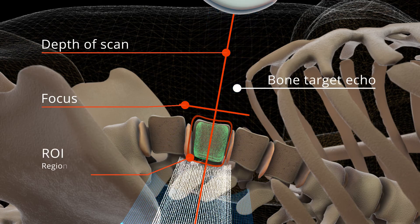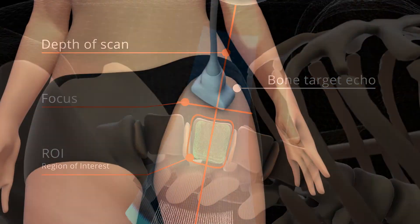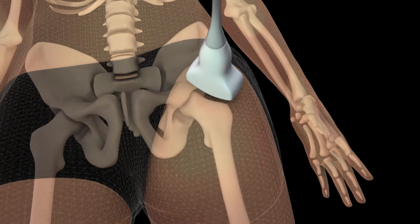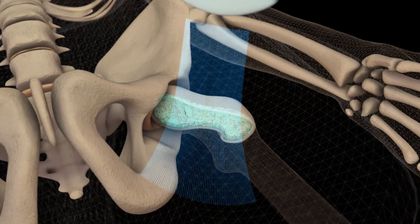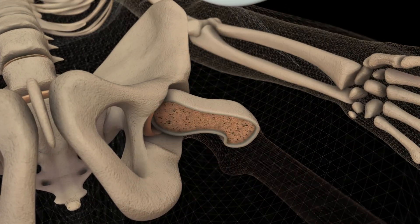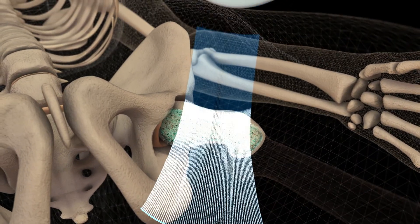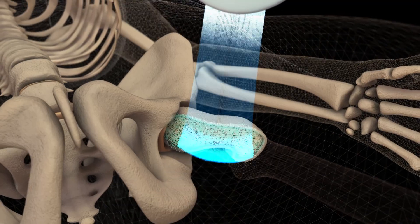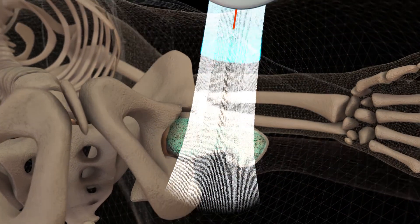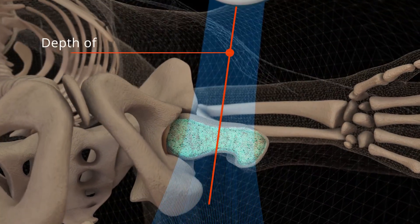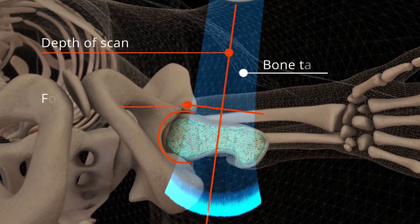During an ecographic scan, the operator sets focus and depth in order to visualize the bone target in the middle of the ecographic field of view. The software automatically detects the bone interfaces and allows the identification of the region of interest.